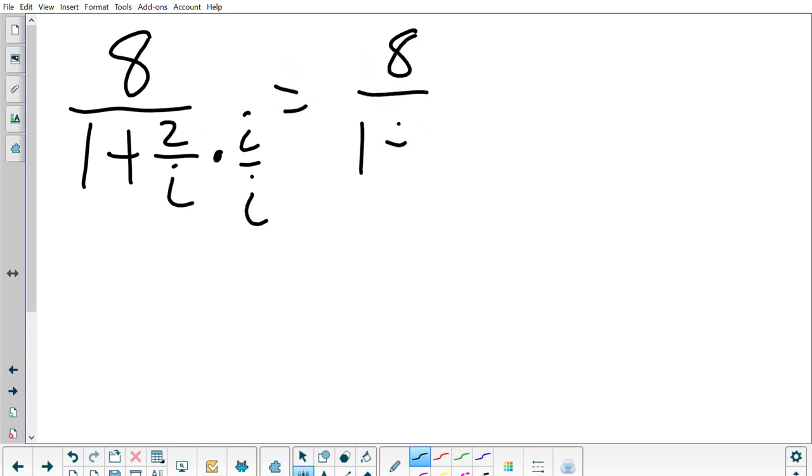Last one is let's say I have 8 over 1 plus 2i over i. So now I have a fraction within a fraction. I do not like i on the bottom so I need to multiply by its conjugate which just means i over i for this example because there's no plus or minus. Then I multiply out so then I get 8 over 1 plus 2i over i squared.